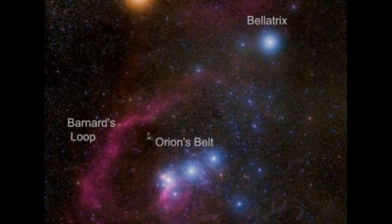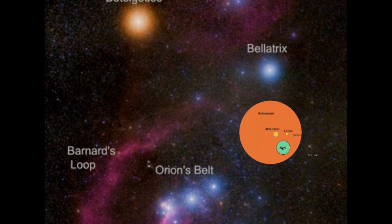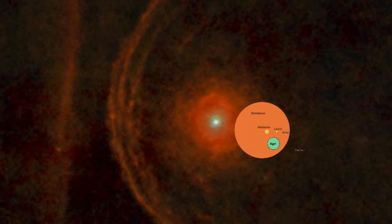Betelgeuse is a red supergiant star. Its radius is 1100 times that of the Sun, but its mass is only 8 times that of the Sun.